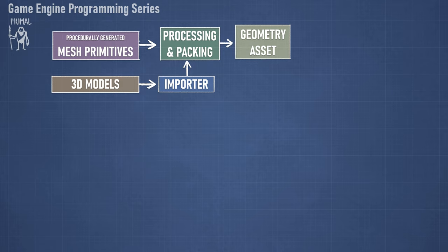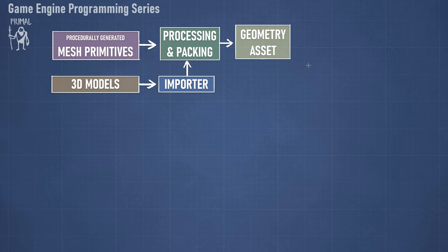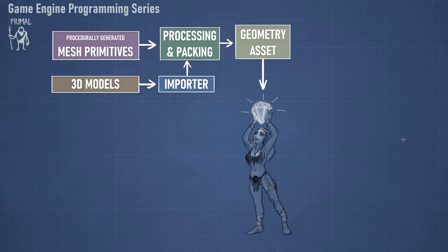Looking at the geometry pipeline in closer detail, we see that geometry can be imported as 3D models created by a content creation tool. To do that we will have an importer, and once we import the content file we'll send it to processing and packing, which will condition the assets into a format usable by the game engine and send it to the level editor so it can be saved as an asset file. Geometry can also be generated procedurally, which is a faster route to set up the pipeline since writing an importer is specific to each kind of content file.